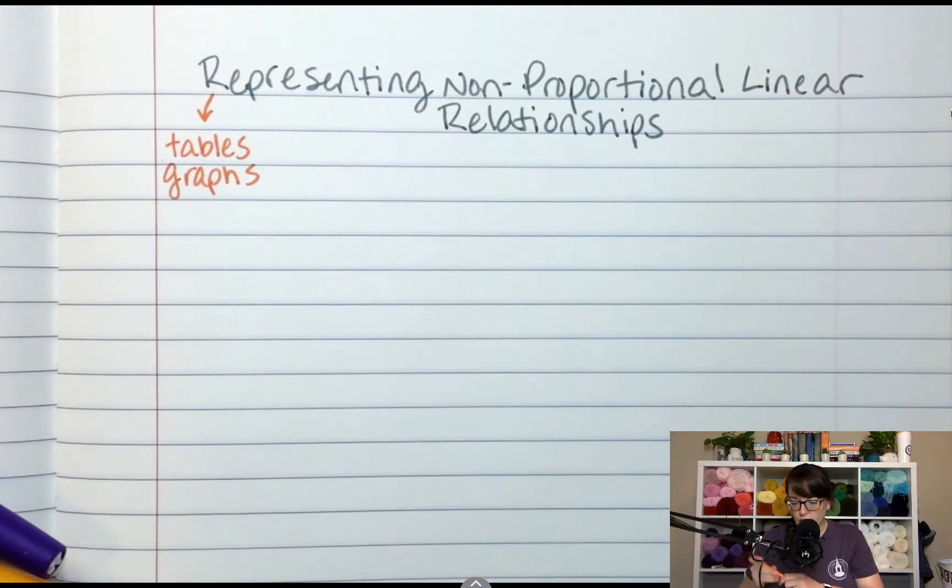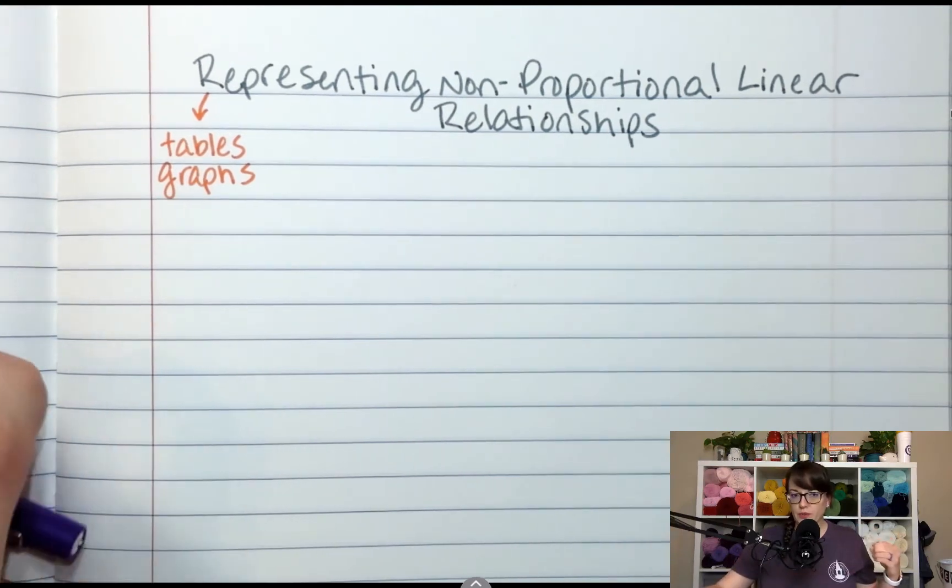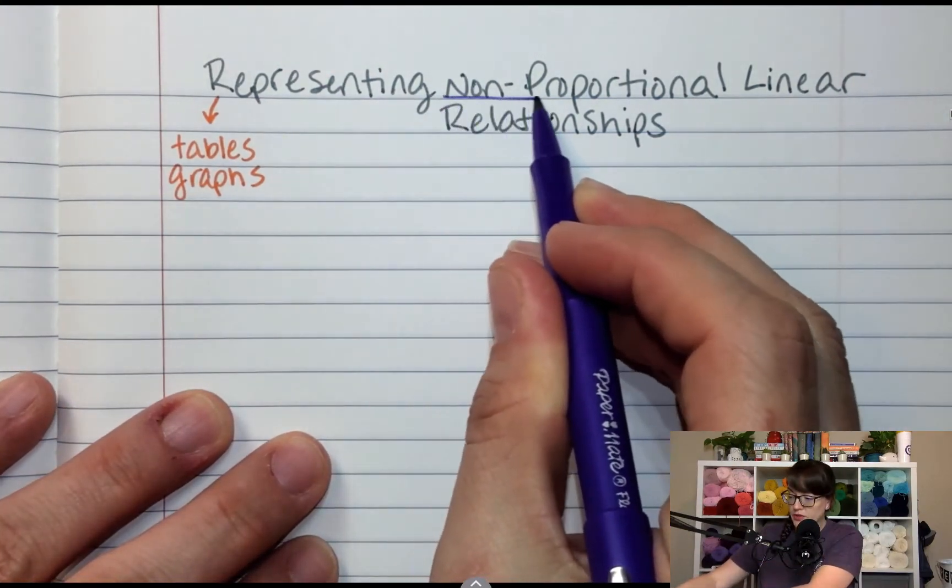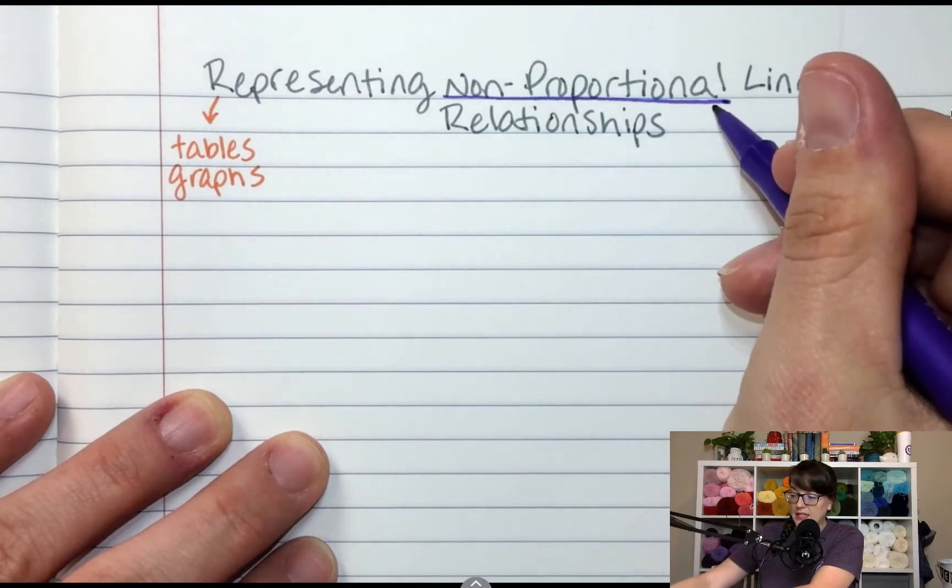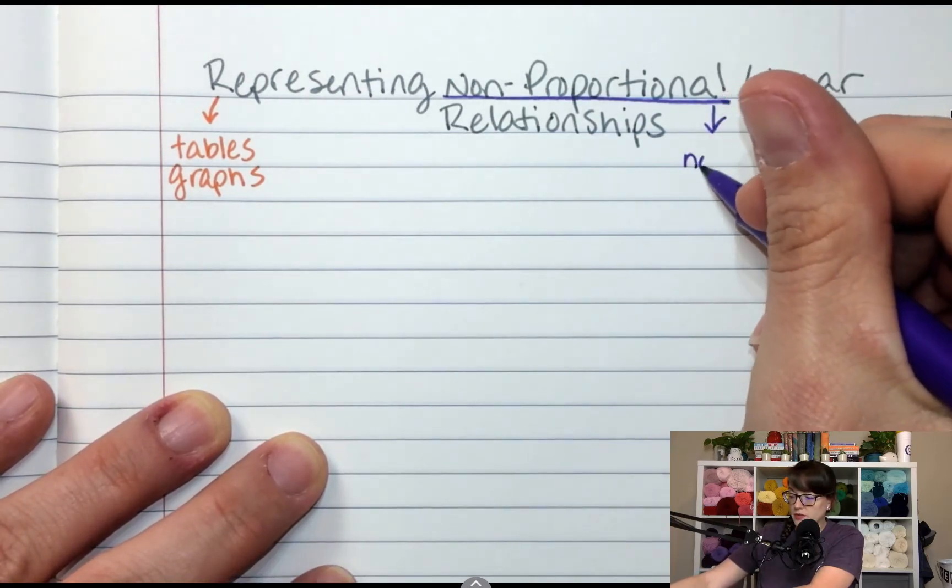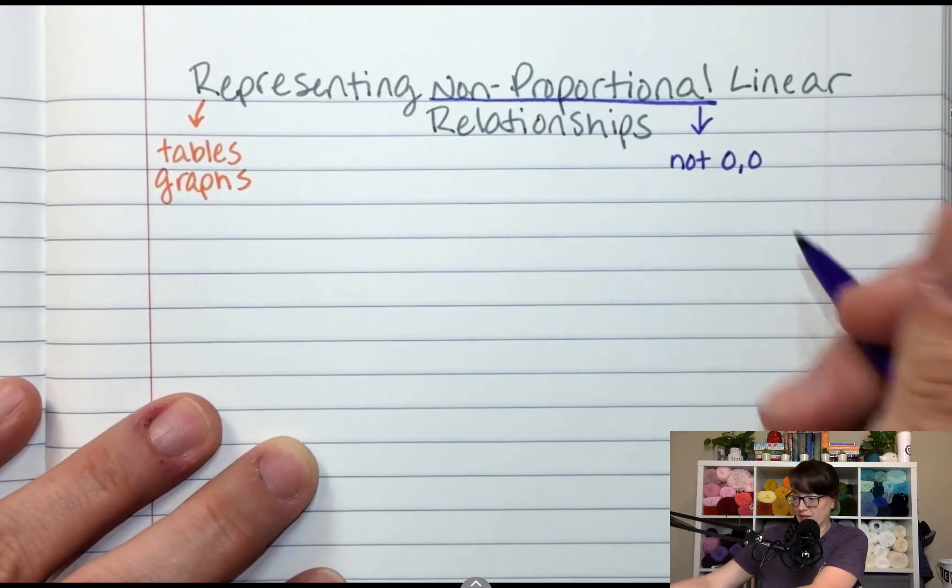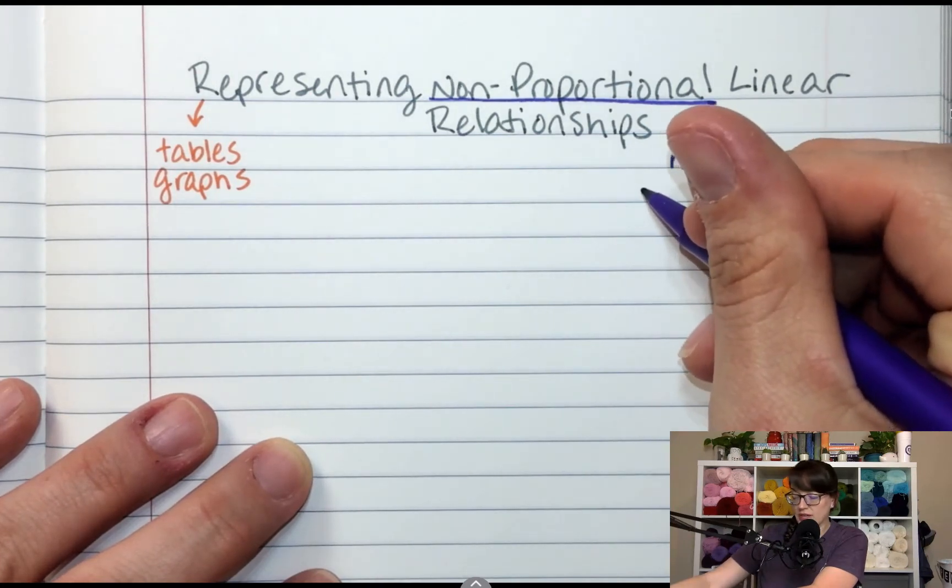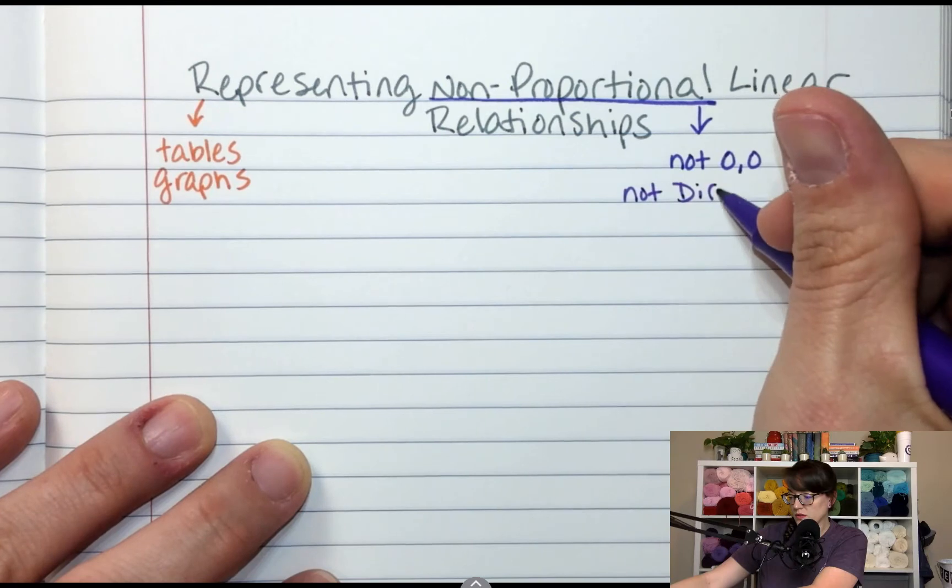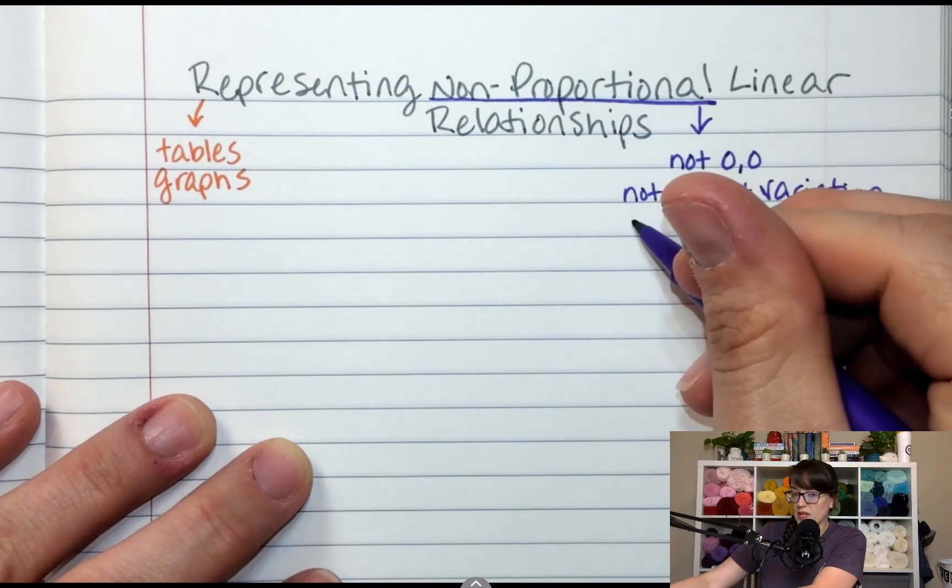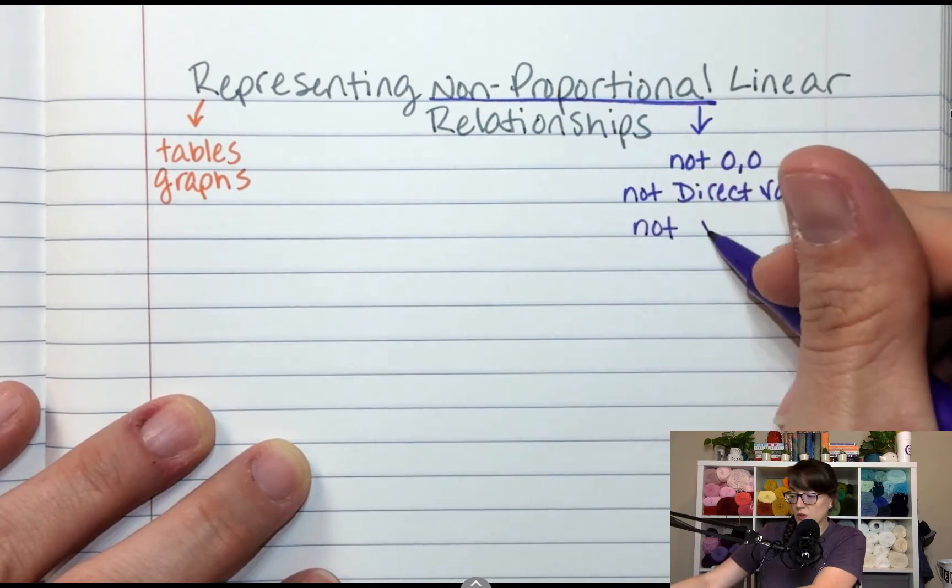Non-proportional. To be proportional means what? Constant rate of change, direct variation, it's a straight line, it goes through 0,0. So non-proportional is not through 0,0. It's not necessarily a multiplicative relationship. So it's not a direct variation. Remember with direct variation, our formula was y equals kx, so it's not y equals kx.